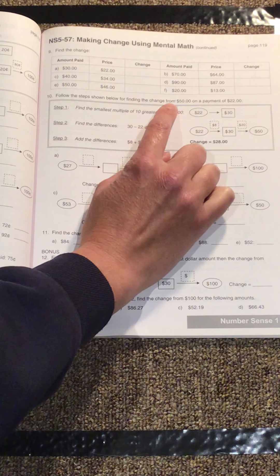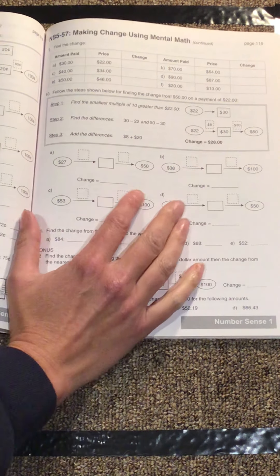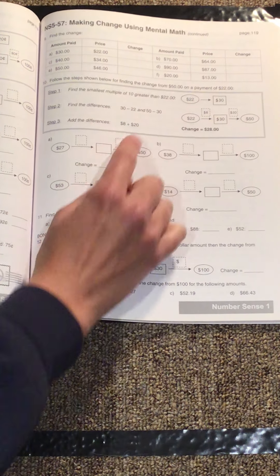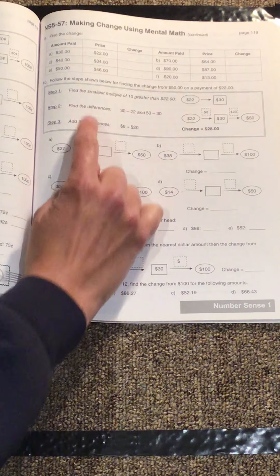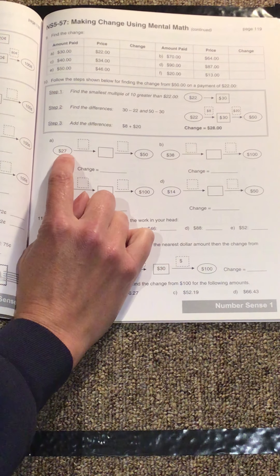Follow the steps shown below for finding the change from $50 on a payment of $22. Okay, so they're showing you, this is the instructions on what to do here. So for the box, you find the smallest group of 10 that's bigger than 27.